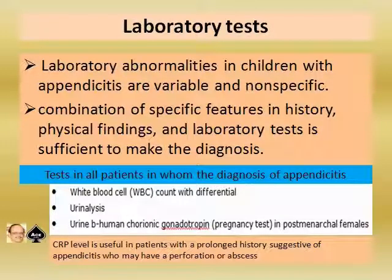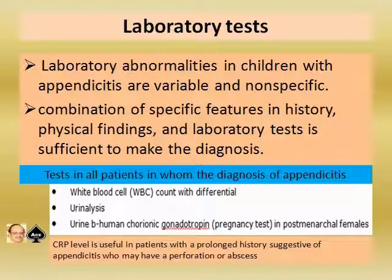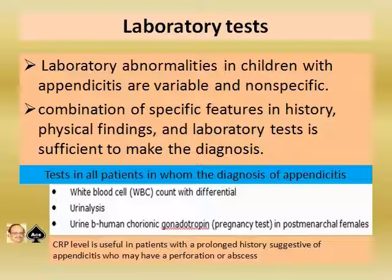Tests to perform in all patients with suspected appendicitis include WBC count with differential, urinalysis, and urine or serum human chorionic gonadotropin (HCG) for pregnancy testing in post-menarchal females. CRP level is useful in patients with prolonged history suggestive of appendicitis who may have perforation or abscess.